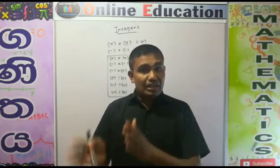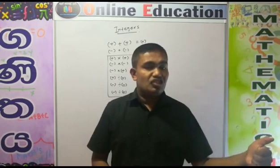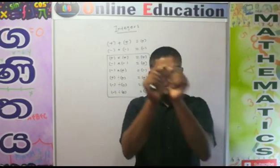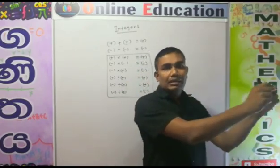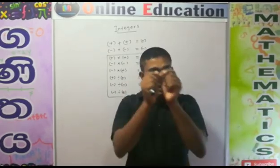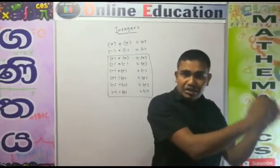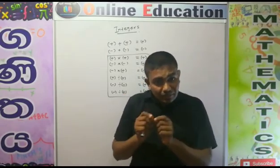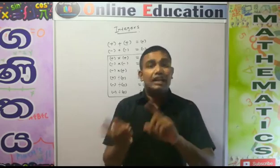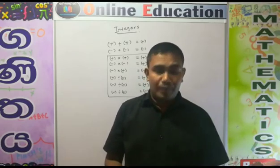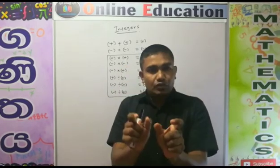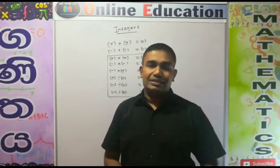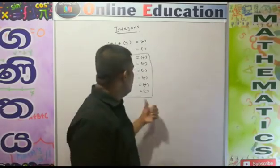If you are multiplying different sign two numbers, the answer sign should be minus. That means: plus number multiplied by plus number, answer sign is plus. Minus number multiplied by minus number, answer sign is plus. Minus number into plus number, answer sign should be minus. If the signs are different, the answer should be minus; if the signs are the same, the answer should be plus.